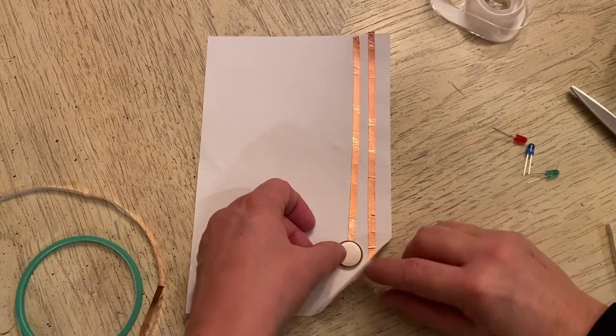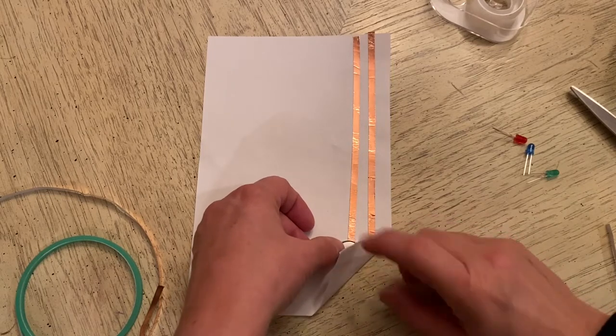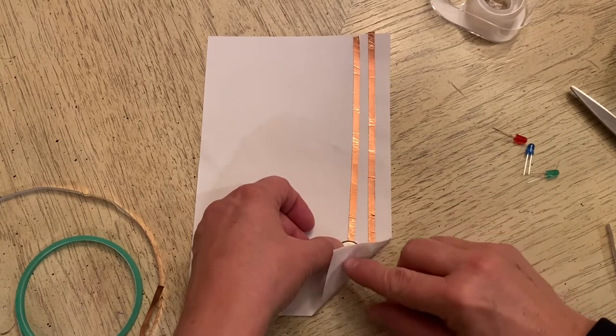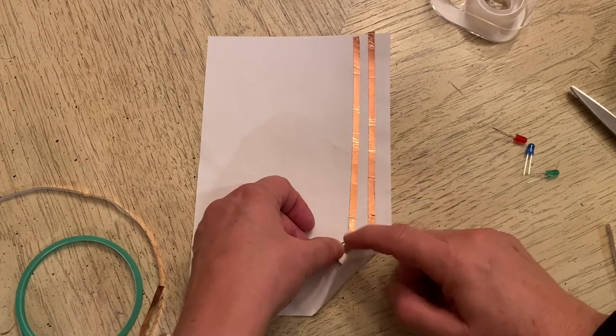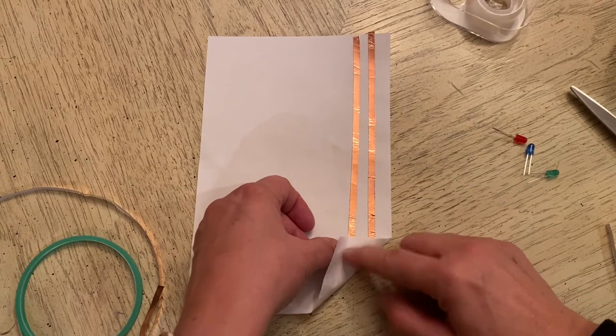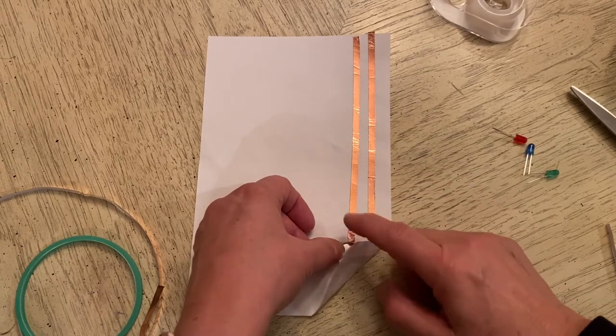I am going to tape the battery on so that there's a way for this tape to make contact with the battery to create the circuit. So I don't want to cover the whole battery. I just want to secure it with the tape.